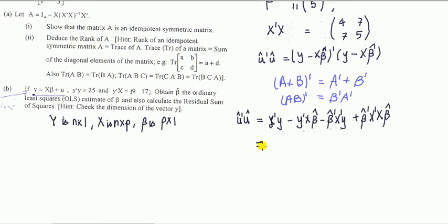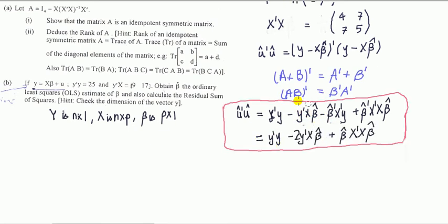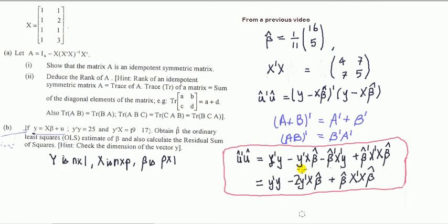Since we're given y-transpose-x, I'm going to have two lots of this. We've just derived an expression for the residual sum of squares broken into these components, and we have all these pieces from what I did previously.